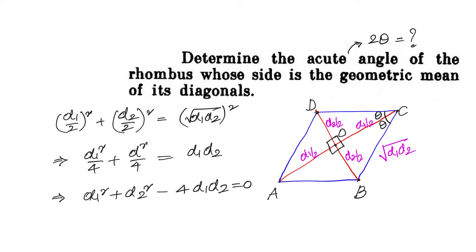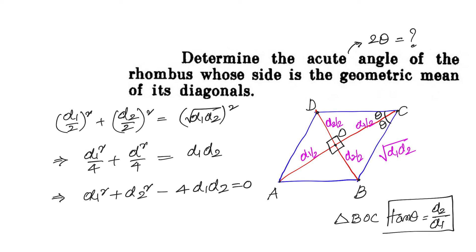We need to find 2θ, so let us look at triangle BOC. In triangle BOC, tan θ = opposite/adjacent = (d2/2)/(d1/2) = d2/d1. If we can get this into a quadratic equation in d2/d1, we can easily find the value of tan θ.